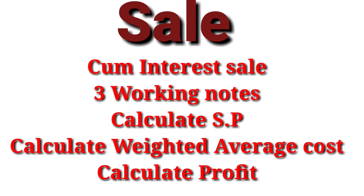Sale is the highest level of difficulty in this chapter. For a cum-interest sale, three working notes are needed. The additional — first — working note is to calculate the selling price: multiply the units by the rate (e.g., 100 × 98 = 9,800) and then deduct the interest to get the actual selling price. After that, the remaining two working notes — weighted average cost and profit calculation — are the same as for ex-interest sale.